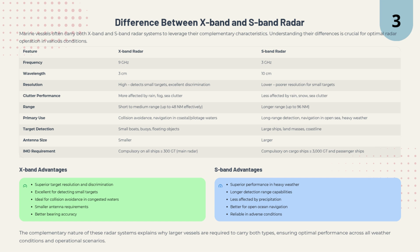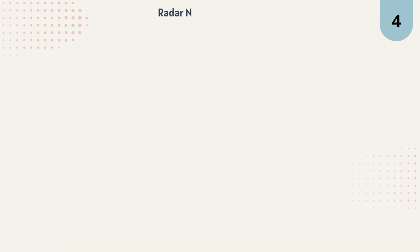S-band radars perform much better in heavy weather and can reach longer distances, up to 96 nautical miles. X-band radars are mainly for collision avoidance and navigation in coastal or pilotage waters. They're great for spotting buoys, small boats, and floating objects, thanks to their smaller antenna and better bearing accuracy. S-band radars are more suited for long-range detection in the open sea and during heavy weather. They're reliable in adverse conditions and essential for detecting large ships, coastlines, and landmasses.